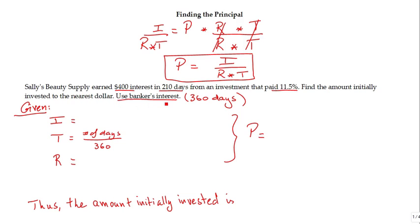Use banker's interest. So when it says use banker's interest, that means we have to use the days in one year are 360.